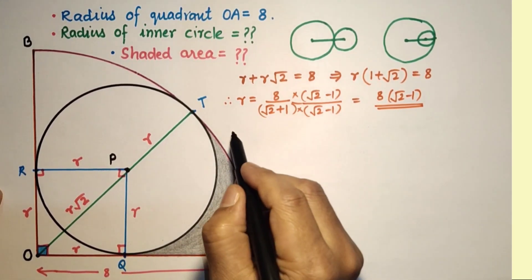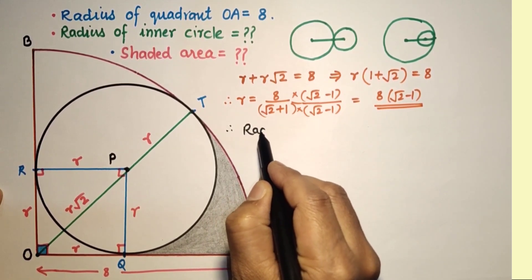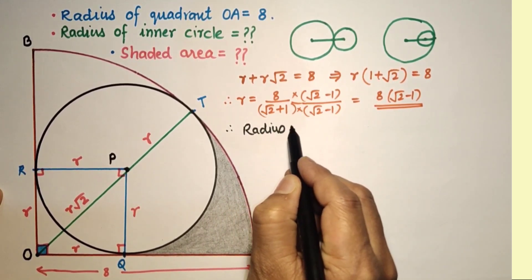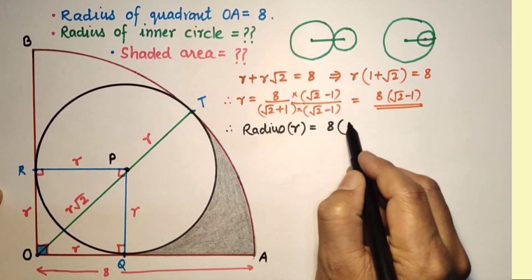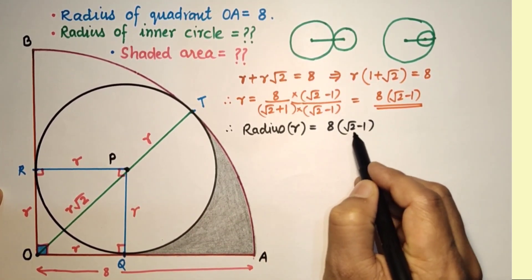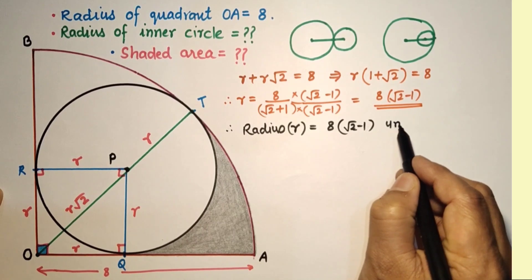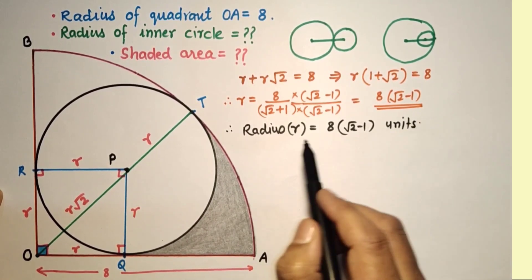Therefore, the radius of the inner circle is R = 8(√2 - 1) units. This is the first answer.